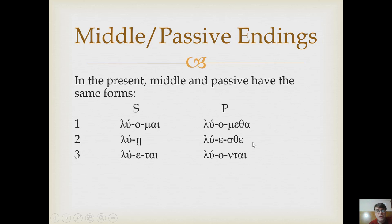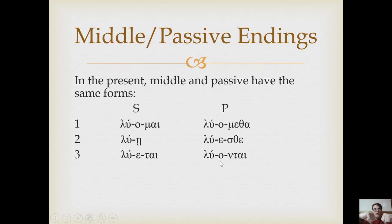With these middle or passive endings, you can distinguish the connecting vowel much more clearly. Before mu's, the connecting vowel is an omicron; before nu's, the connecting vowel is also an omicron. Before everything else, the connecting vowel is an epsilon. These connecting vowels are like cartilage holding the stem and the proper ending together.